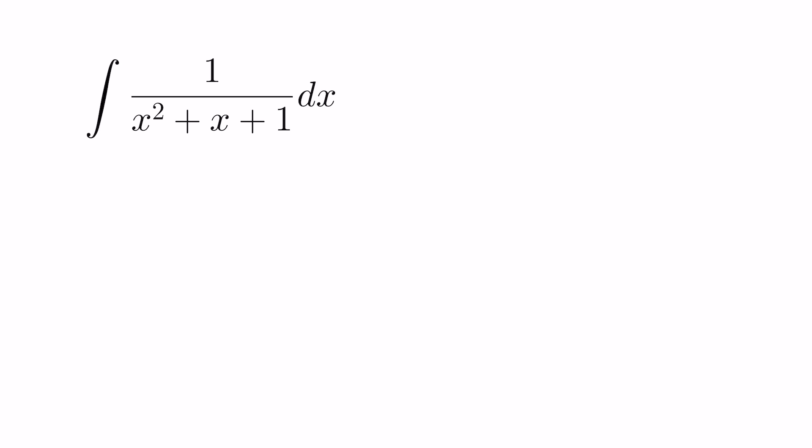What we want to take a look at here is completing the square on this quadratic. So we have x squared plus x plus 1. I'm going to grab my b value, divide it by 2 and square it. So I'm going to add a quarter, subtract a quarter, then add 1.